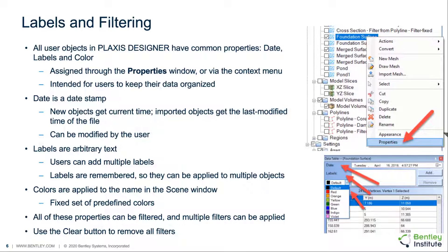All user objects in Plexus Designer have the common properties of date, labels, and color. These three properties can be used to organize or group objects in the software. The properties can be accessed through right-clicking on an object and selecting the properties action on the menu. Objects are assigned a date stamp, which for new objects is the current time. For imported objects, the date is the last modified time of the file.